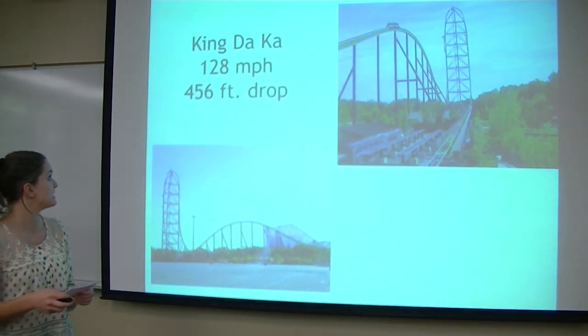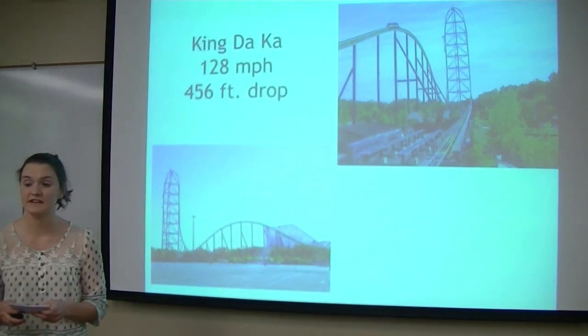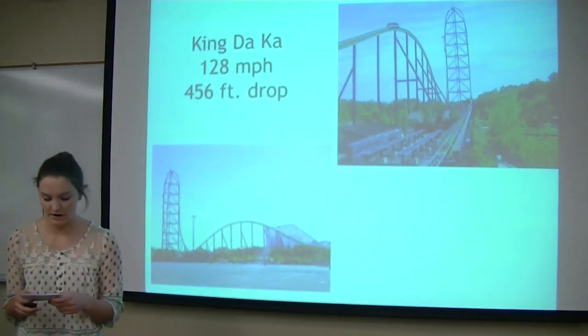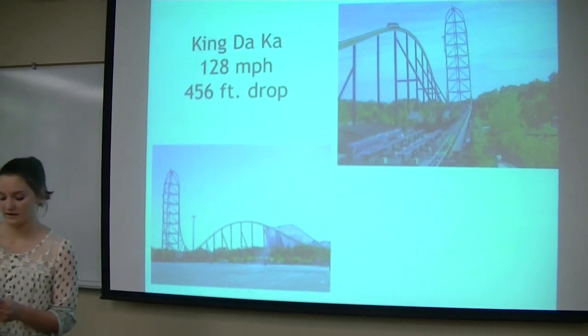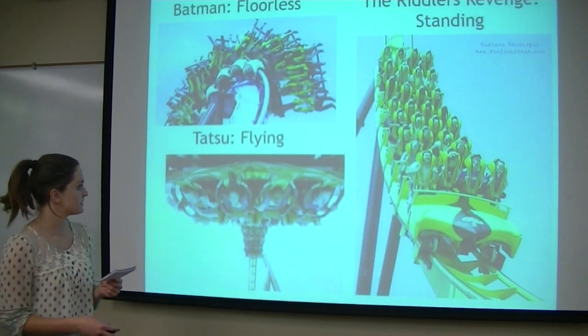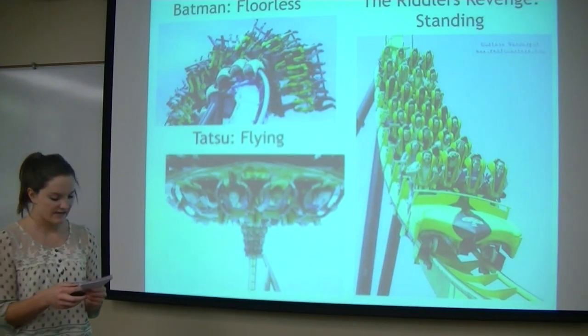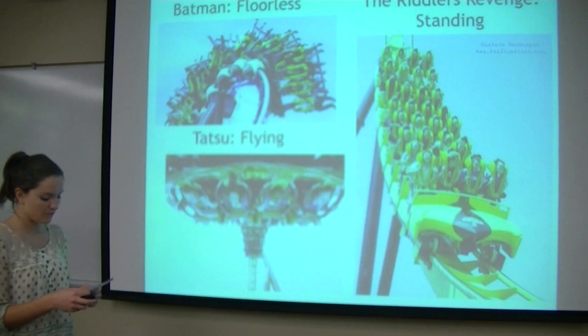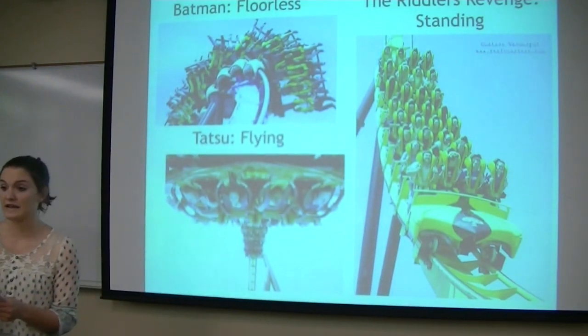Kingda Ka is the tallest coaster, towering at 456 feet and 128 miles per hour. Other coasters hold records for the most inversions or their type of coaster. Tatsu is a flying roller coaster at Six Flags Magic Mountain that is over 170 feet tall and goes 82 miles per hour.